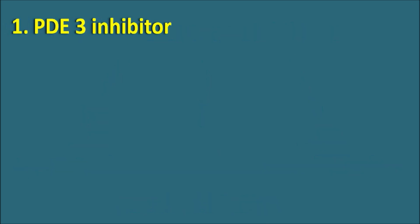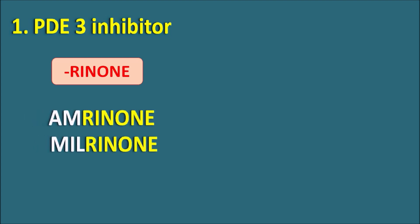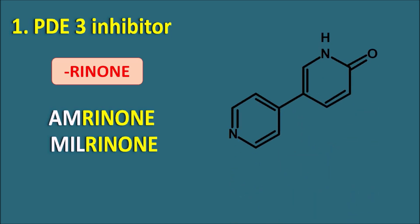The first type is Phosphodiesterase type 3 inhibitors. We have drugs which end with the suffix 'renone' — two drugs: amrinone as well as milrinone. These two drugs share a common structure: a pyridine ring attached by a single bond, forming a bipyridine ring system with a ketone. So the suffix 'renone' indicates Phosphodiesterase type 3 inhibitors.